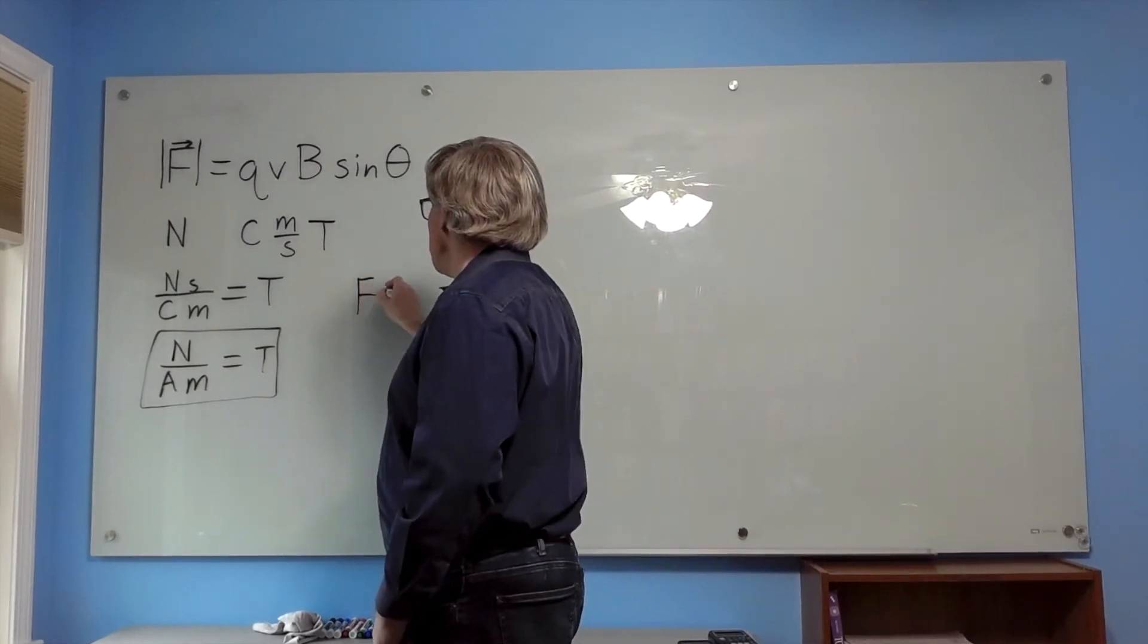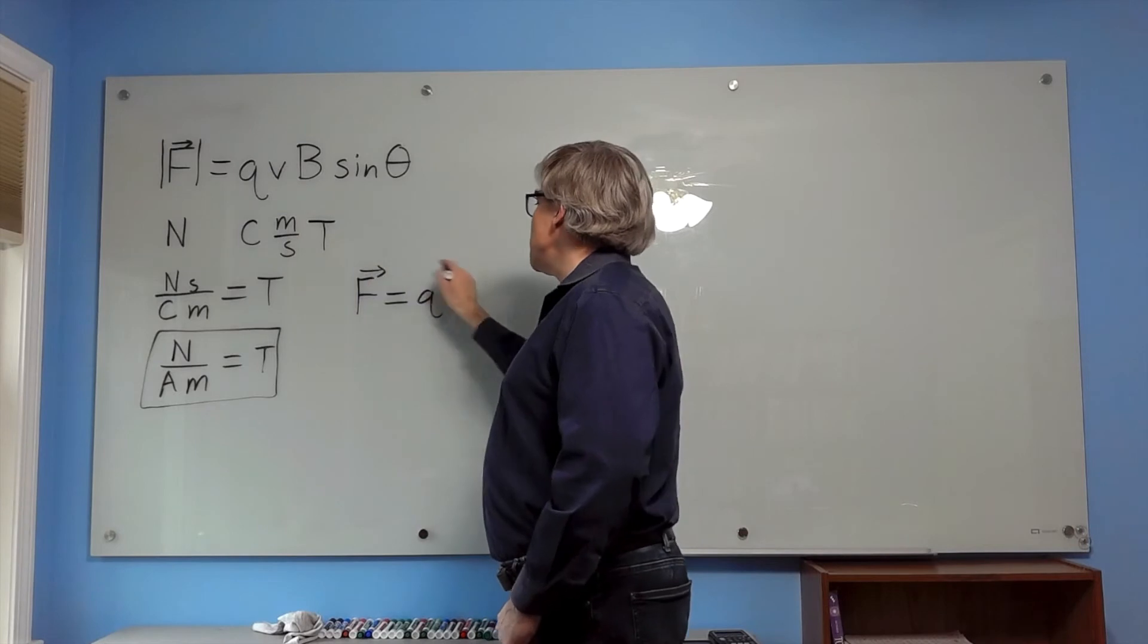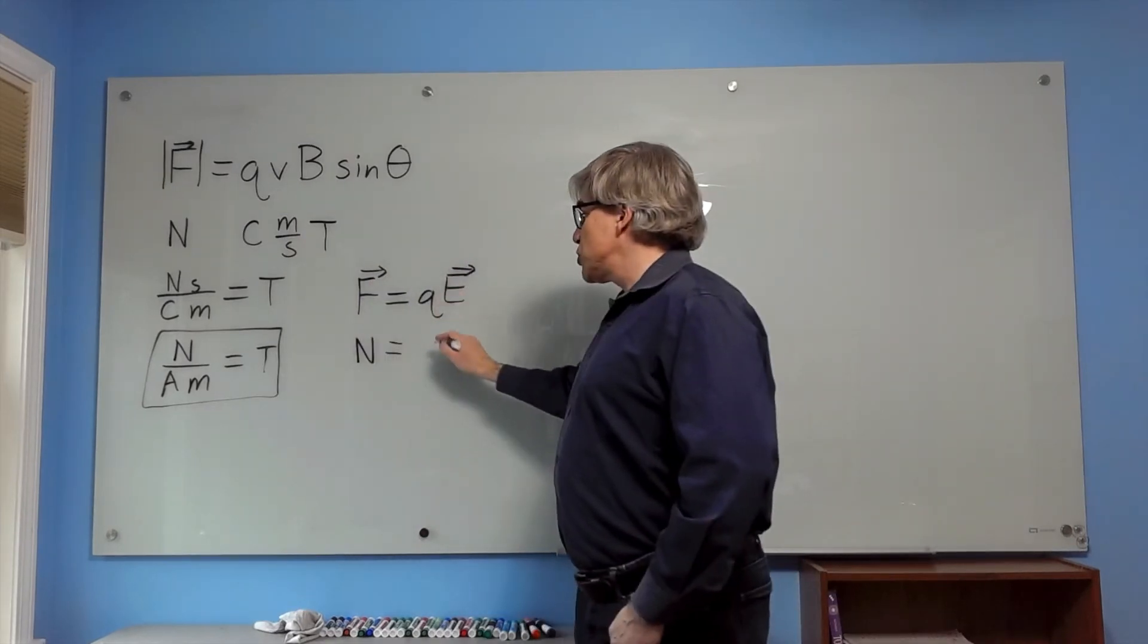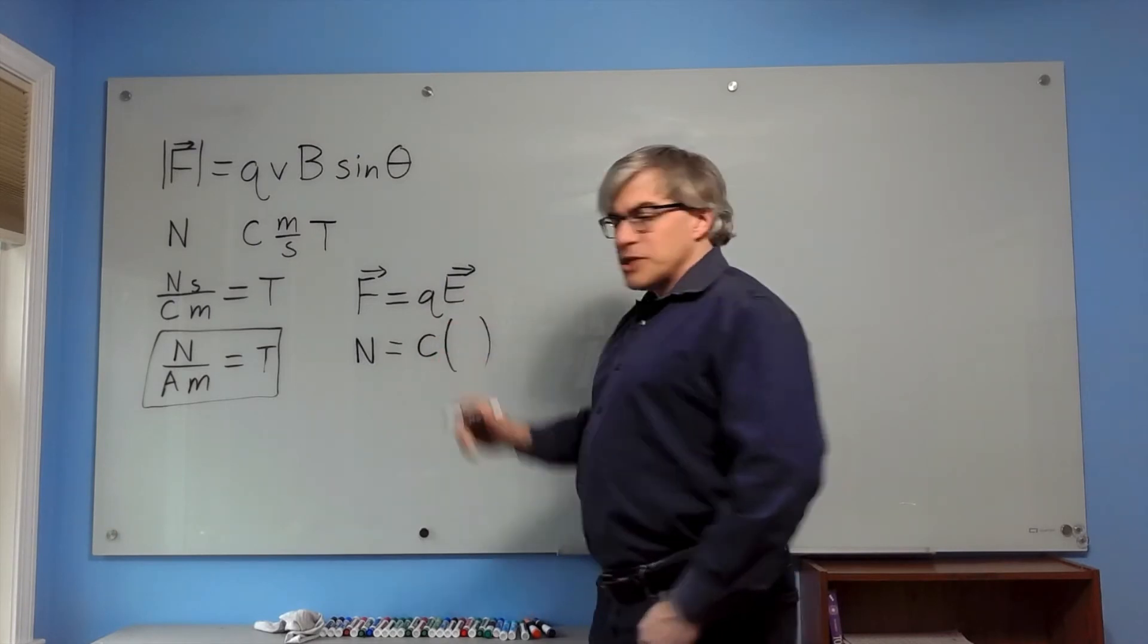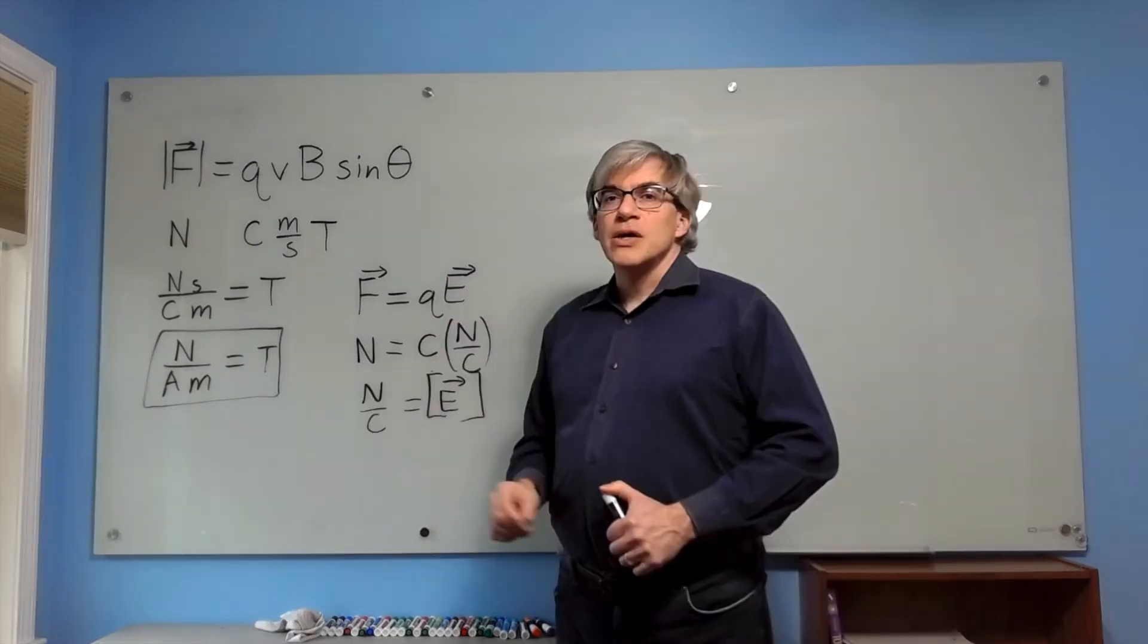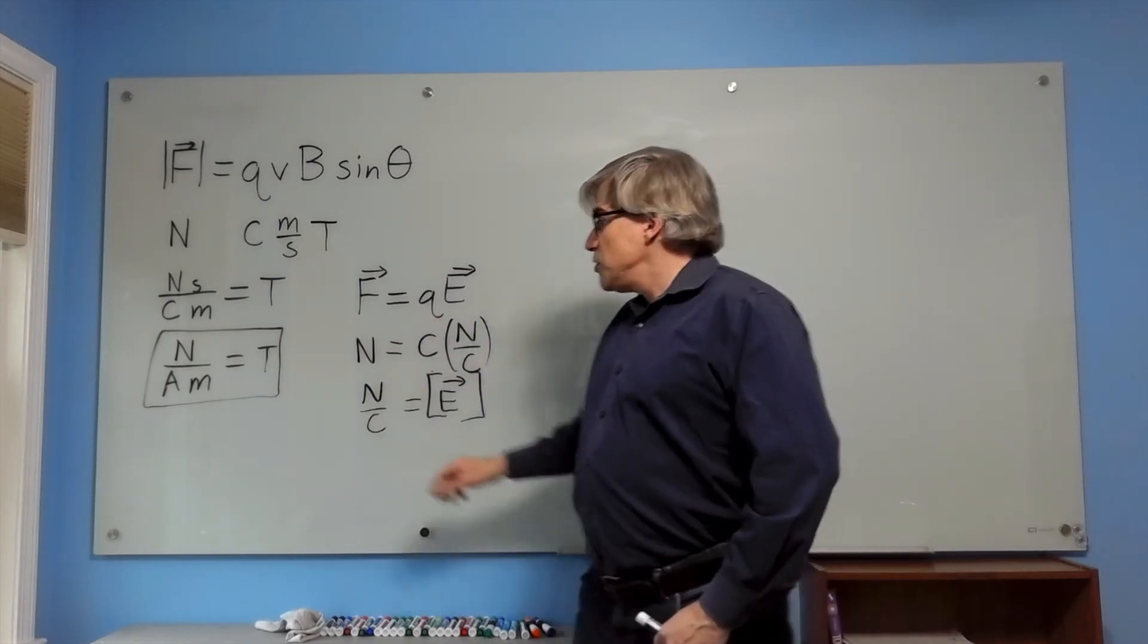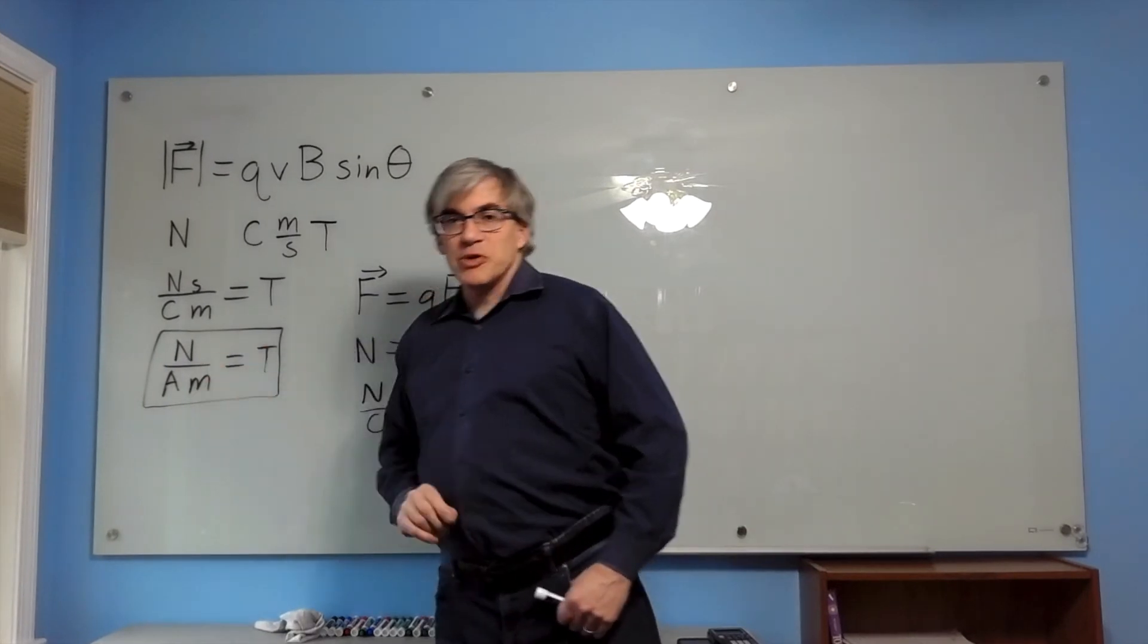For electric field, we would use force equals QE as the most basic definition of it. The units of force, again, are newtons. Electric charge is in Coulombs. And then we have electric field. For some reason, they didn't give that a name. The units of electric field are newton per coulomb. The units of magnetic field are Tesla, which is newton per ampere meter.